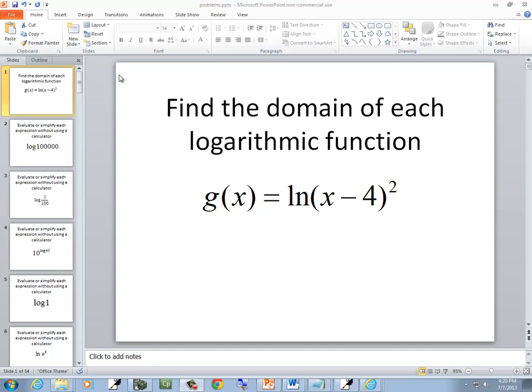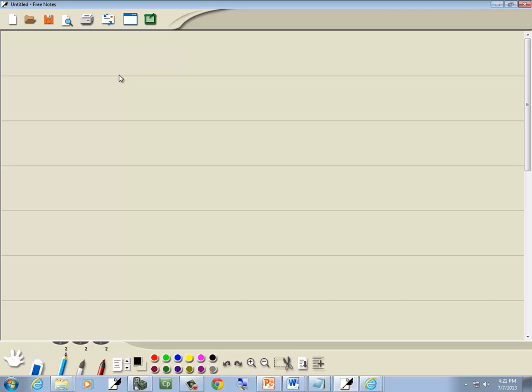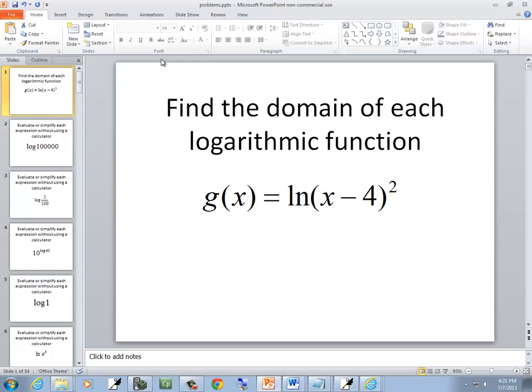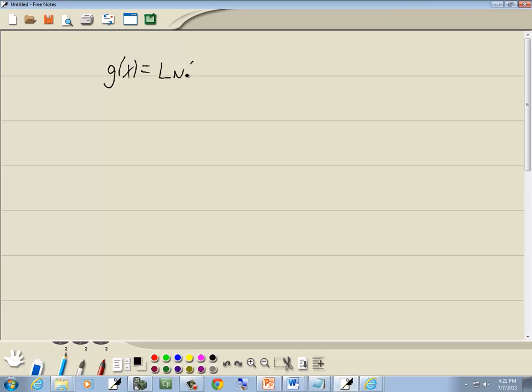In this problem, we will find the domain of each log function. We've got g of x is equal to natural log of x minus 4 squared.